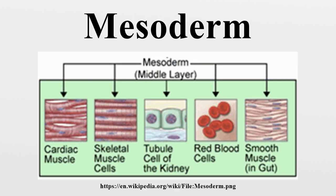Some of the mesoderm derivatives include the muscles of the tongue, the pharyngeal arch muscles, connective tissue, dermis and subcutaneous layer of the skin, bone and cartilage, dura mater, endothelium of blood vessels, red blood cells, white blood cells, microglia and Kupffer cells, the kidneys, and the adrenal cortex.